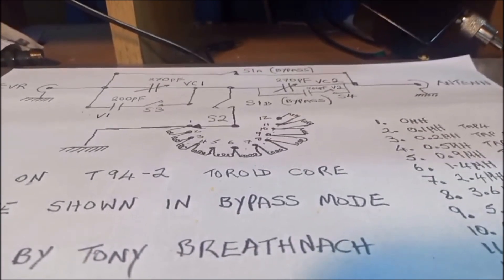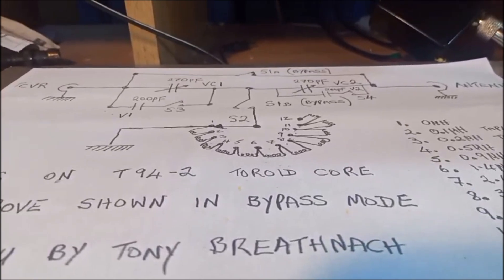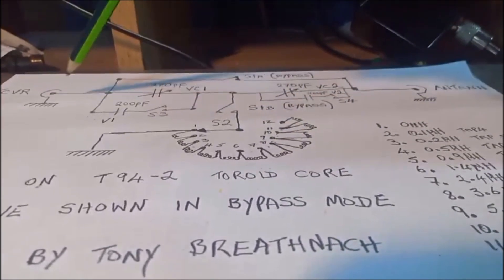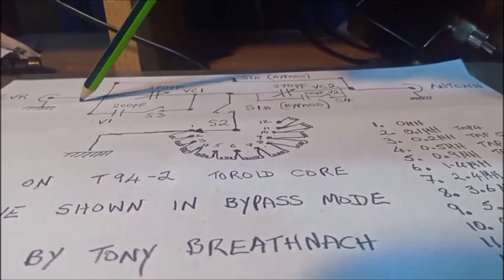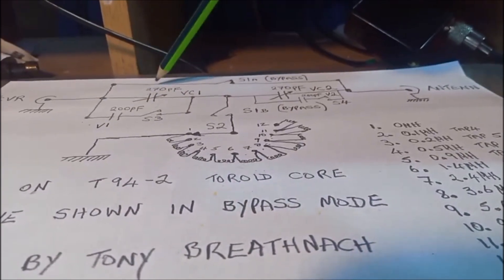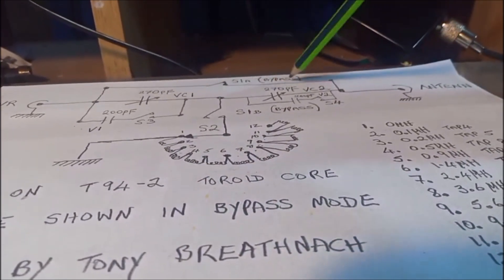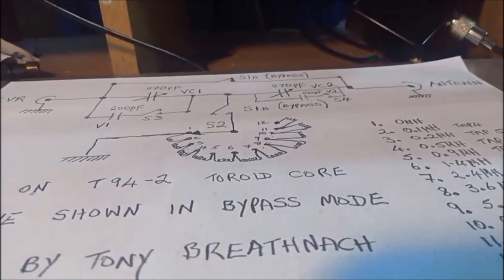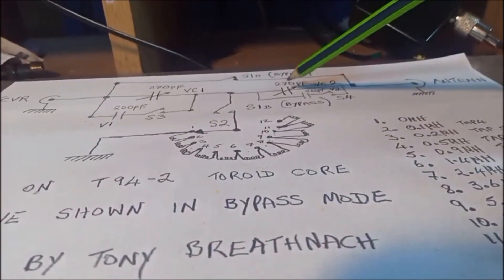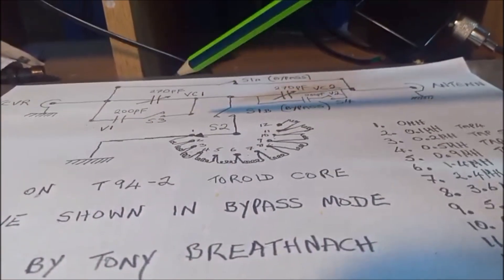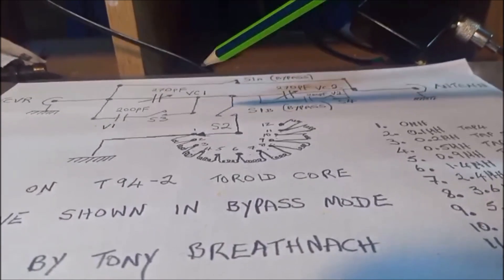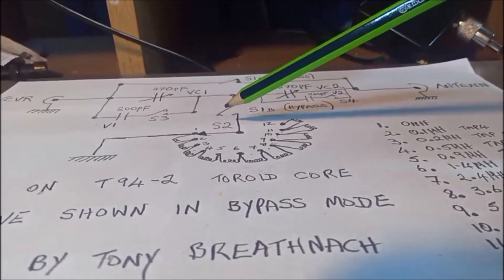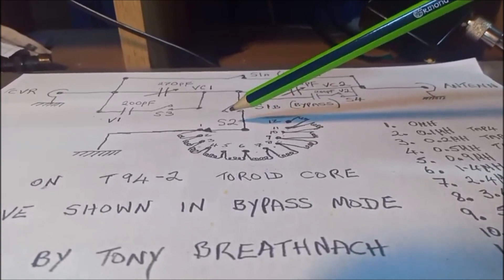Now the circuit is shown in the bypass position at the moment, so the radio, the transceiver, goes directly through the switch, the bypass switch, and then out to the antenna. So the capacitors are shorted out and the inductances are isolated.